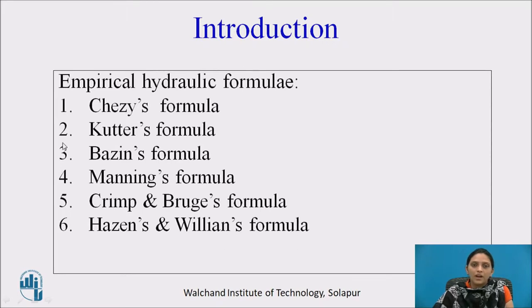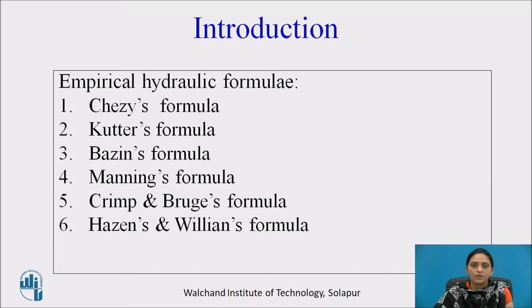The following are the empirical formulas used to determine the velocity of flow: Chezy's formula, Cutter's formula, Bazin's formula, Manning's formula, Crimp and Brugg's formula, and Hazen and Williams' formula.